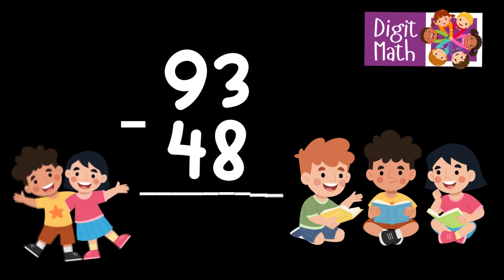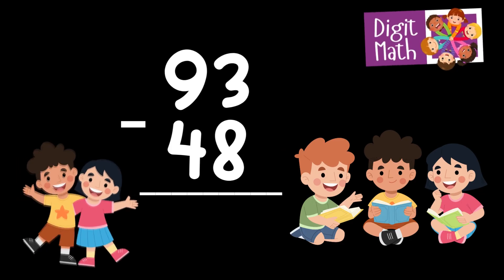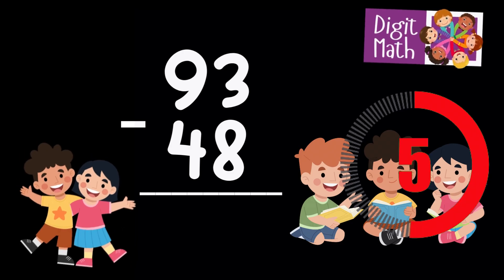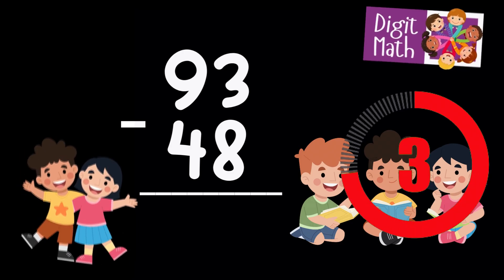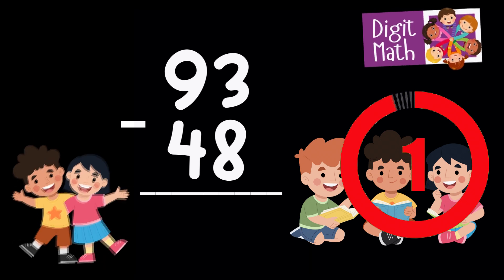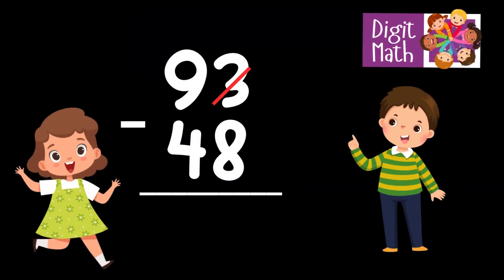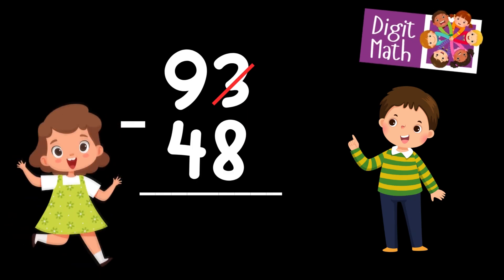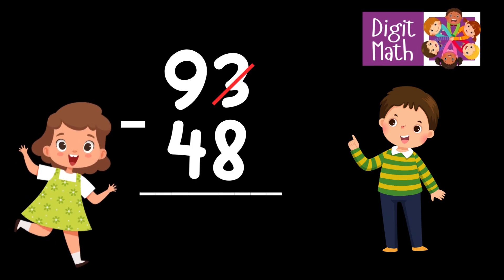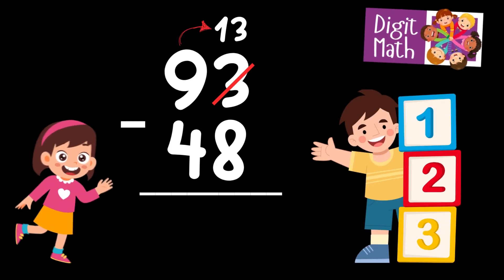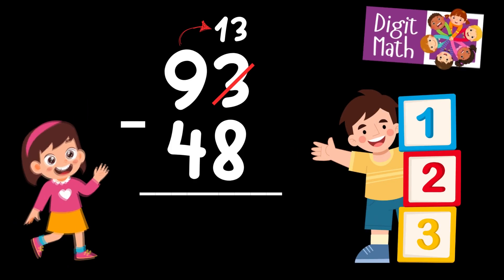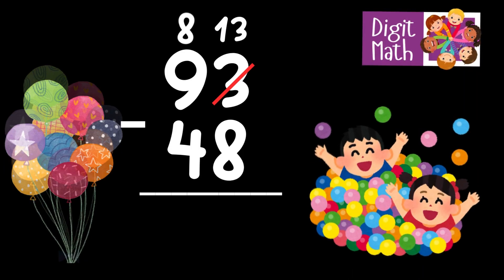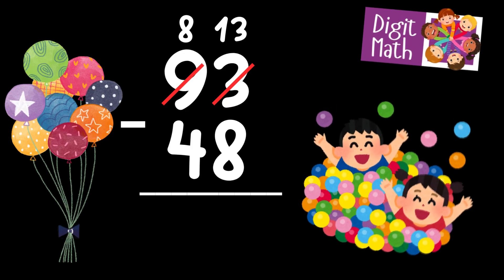93 minus 48 is... Time to think. In the Units column, we have 3 minus 8. Since it's not possible to subtract 8 from 3, we need to borrow from the Tens column. In the Tens column, we have 9. We take 1 from the Tens, leaving 8 in the Tens column and turning the Units column into 13.